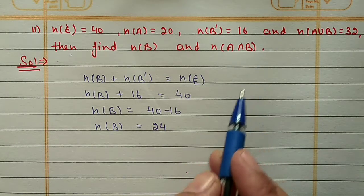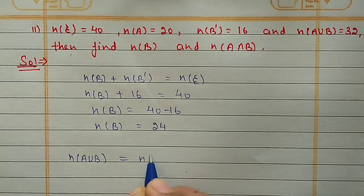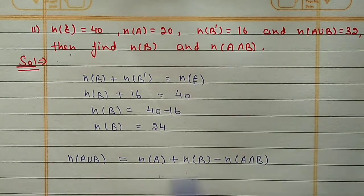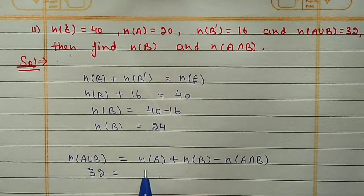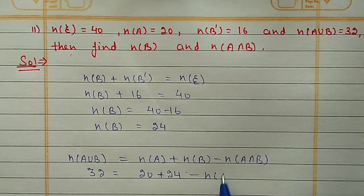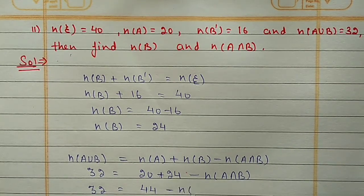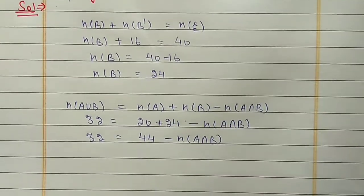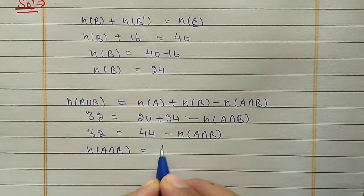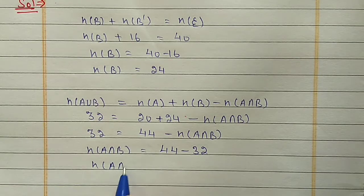To find N(A∩B) we use the first property: N(A∪B) = N(A) + N(B) - N(A∩B). N(A∪B) is 32, N(A) is 20, N(B) we just calculated as 24. So 32 = 44 - N(A∩B). Shifting sides: N(A∩B) = 44 - 32 = 12.